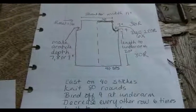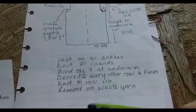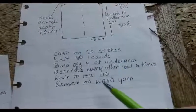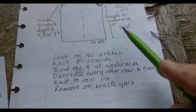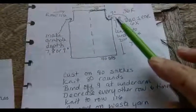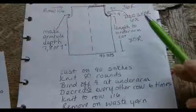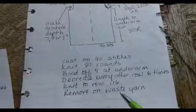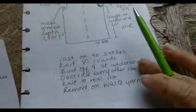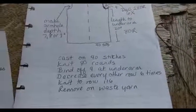Personally, I like working from this little chart. That makes sense to me. But not everybody feels the same. If you need to have a written pattern, take the information from up here and transfer it to some crib notes. Cast on 40 stitches. Then we take this number, knit 80 rounds. Bind off four at the underarm. Decrease one every other row six times. Remove on waist yarn at row 116. There's my final row. So you can write yourself a little mini pattern with no trouble at all.